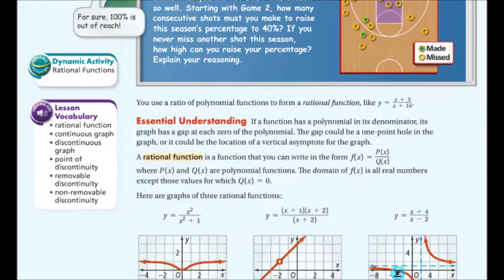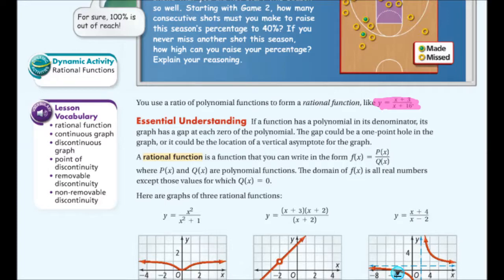A key essential understanding: a function has a polynomial in its denominator. If that's the case, its graph has a gap at each zero of the polynomial. That gap could be a one-point hole in the graph or a location of a vertical asymptote. A rational function is a function you can write in the form f(x) = p(x)/q(x). For example, y = (x+3)/(x+16).